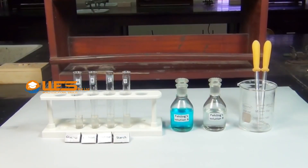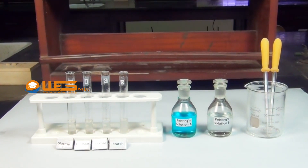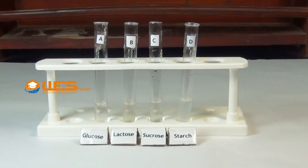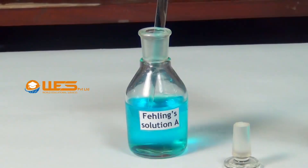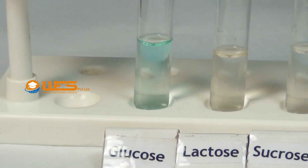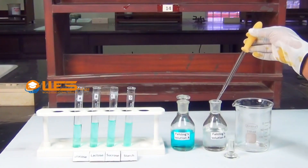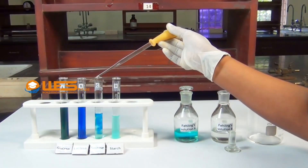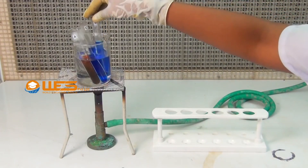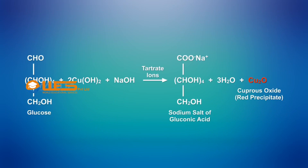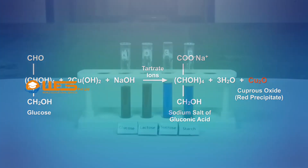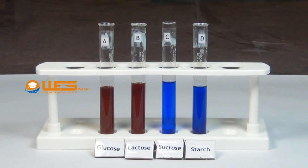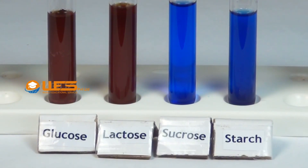Fehling's Test. Take a small quantity of aqueous solution of glucose, lactose, sucrose and suspension of starch in four test tubes A, B, C and D respectively. Using a dropper, add a small quantity of Fehling's solution A into each test tube, then add a small quantity of Fehling's solution B. Heat the test tubes in a boiling water bath for some time. The reducing sugars, glucose and lactose, reduce the copper ions in the reagent to form a red precipitate of cuprous oxide, whereas no such precipitate is formed from the non-reducing sugars, sucrose and starch.